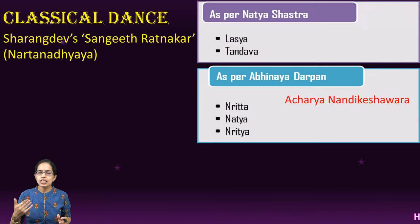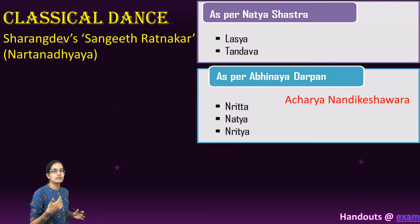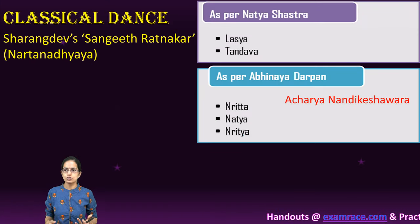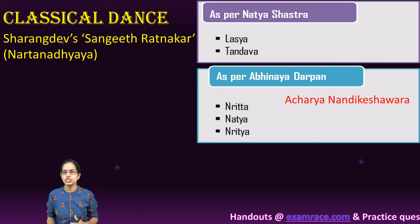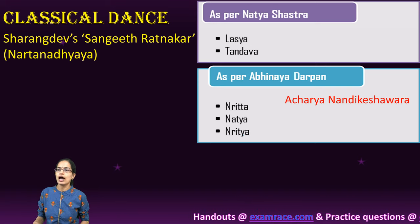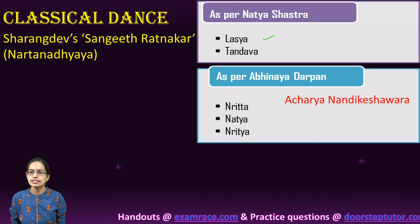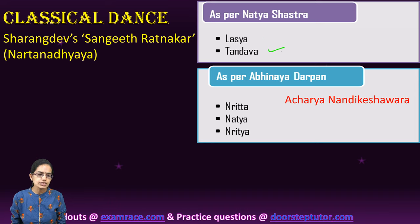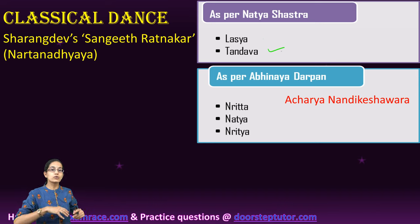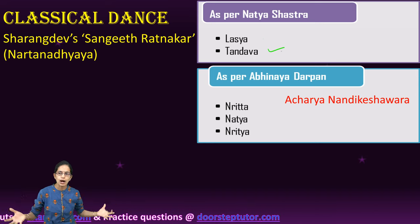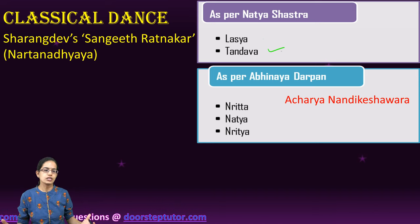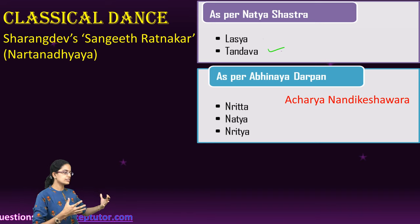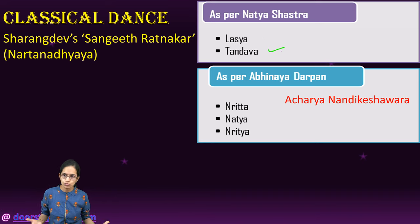Classical dance has been given under different categories. Under the Natya Shastra you have Lasya and Tandav as the two important forms. Lasya talks about grace and bhav, whereas Tandav talks about a symbolic dance with rhythms and movements.